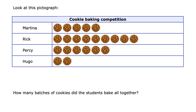Let's look at this last question. This is a pictograph of a cookie baking competition showing how many cookies each person baked. I can tell that Rick baked the most cookies and Hugo baked the least — he only baked two cookies. The question is: how many batches of cookies did the students bake all together? You could pause, figure that out, and then press play. If you calculated that they baked 22 cookies, you are right.